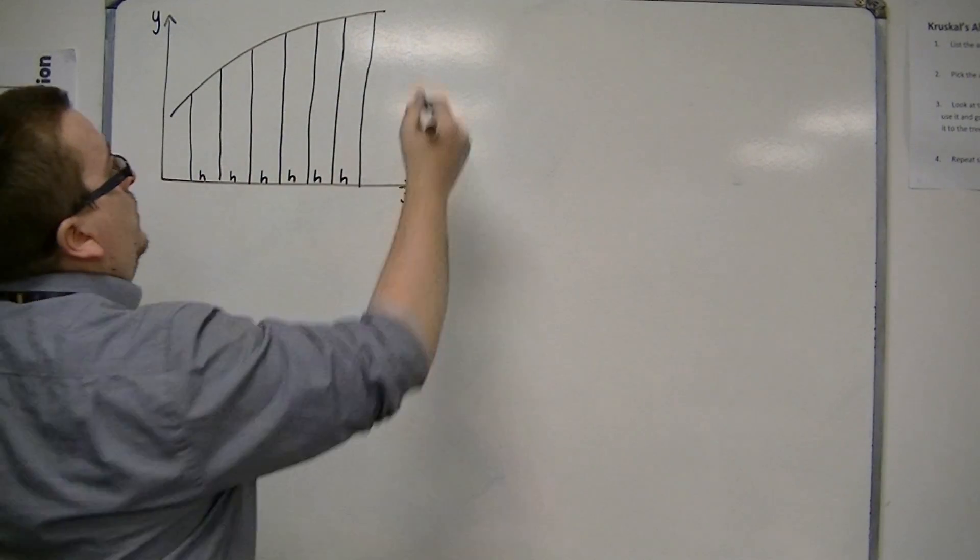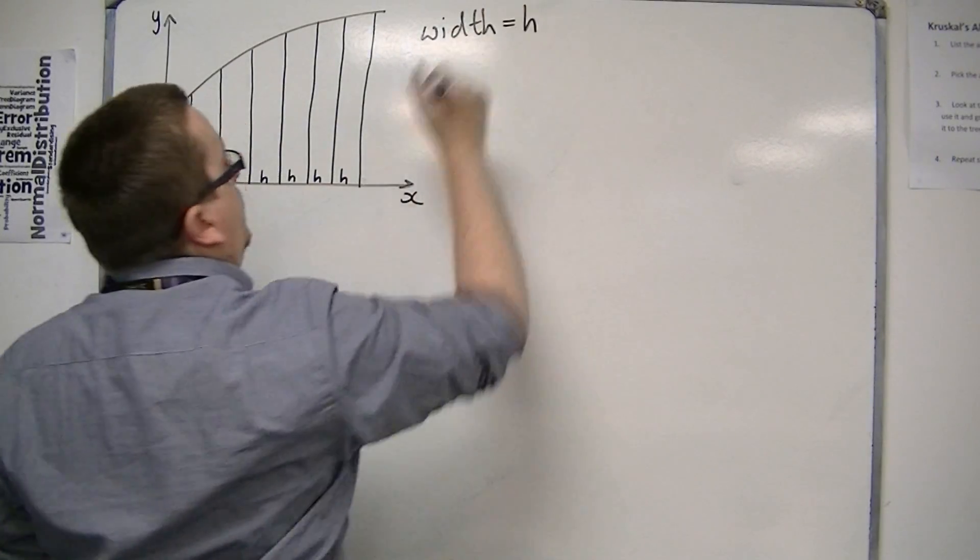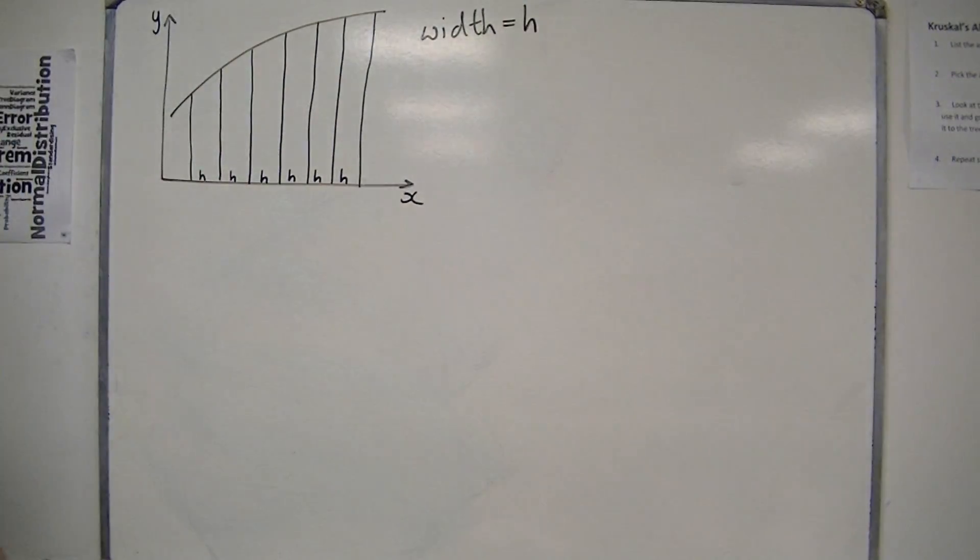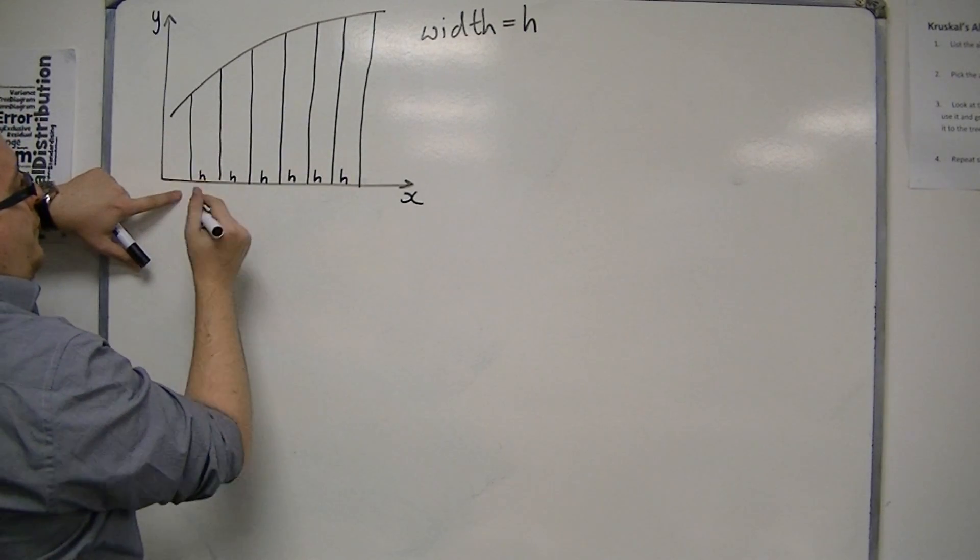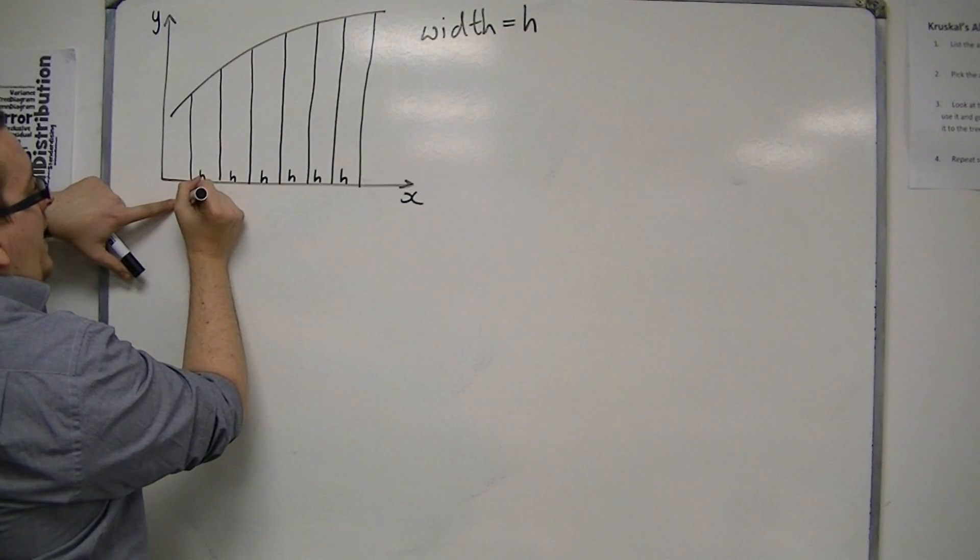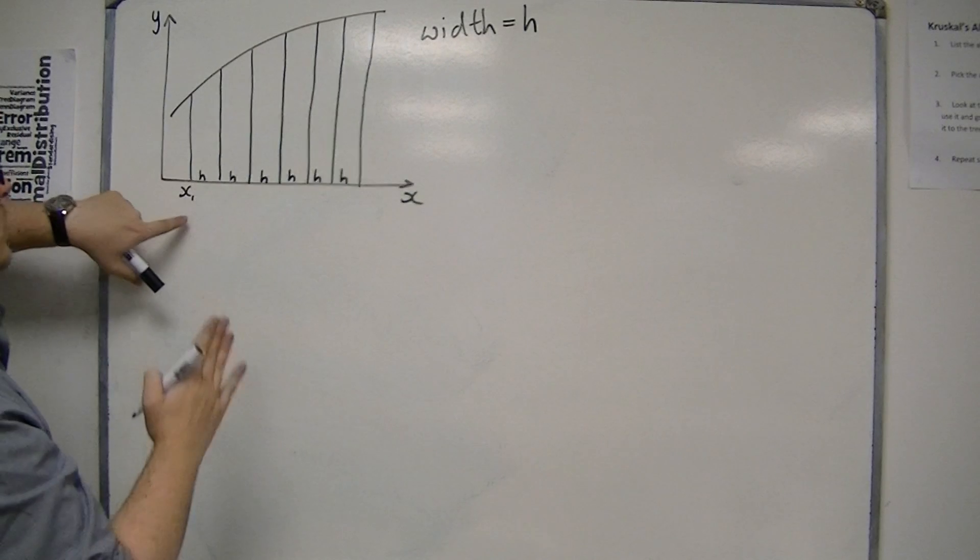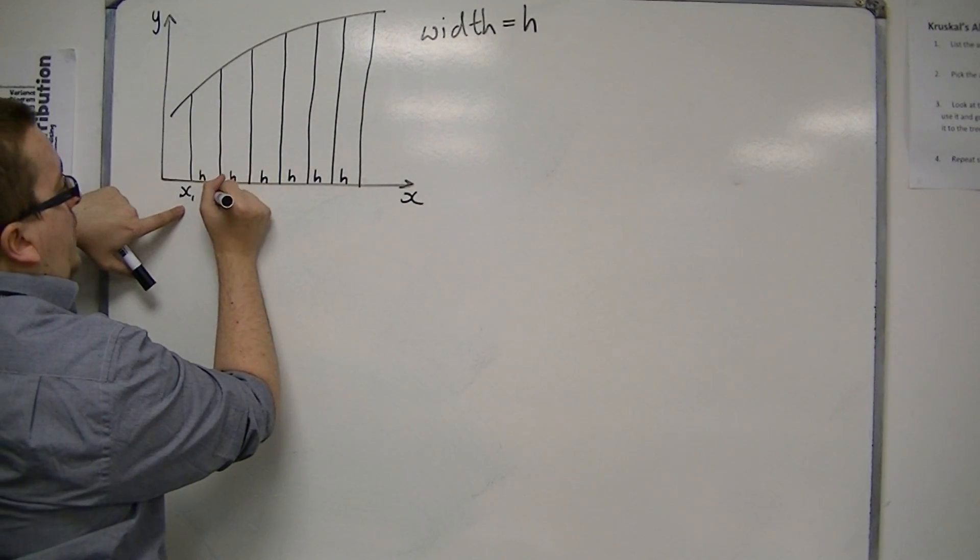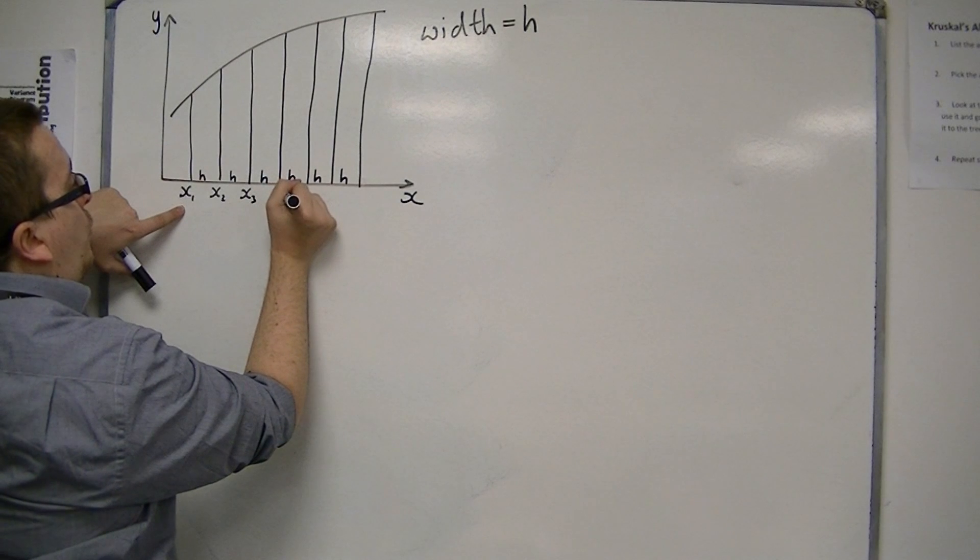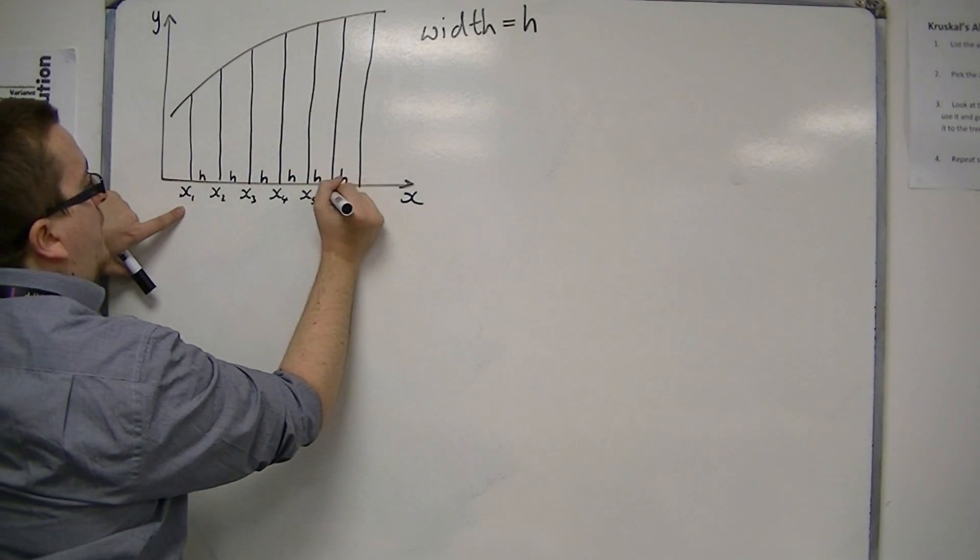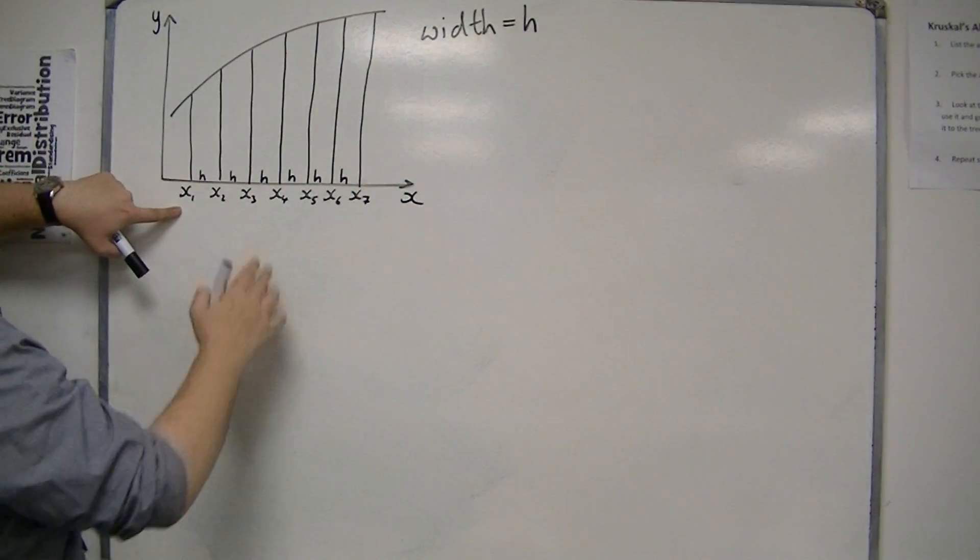Okay? So each strip has a width equal to h. Now we're going to start off with, let's call this x1. Okay? My first ordinate, as it's called. And this will be x2, and then x3, and x4, and x5, and x6, and x7.